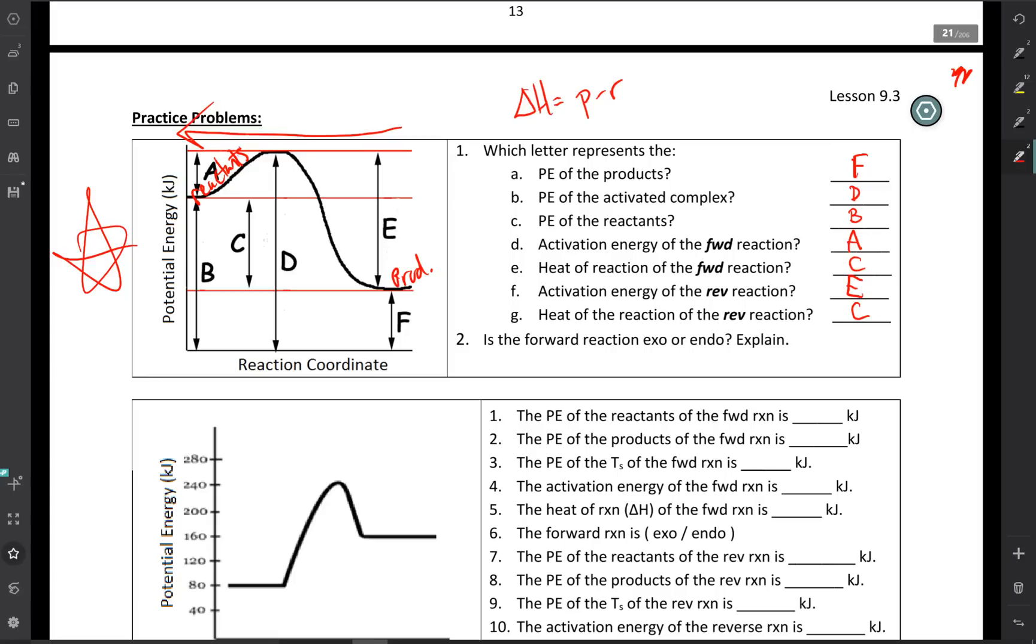And finally, is the forward reaction exo or endothermic? Well, let's see. The reactants have more energy than the products. That must mean that energy was lost. When energy is lost, we have an exothermic reaction.